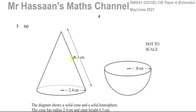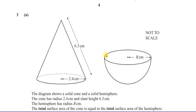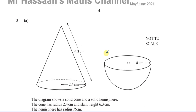Welcome back. This is Mr. Hassan's Math Channel. I'm answering a question from the May-June 2021 IGCSE Cambridge Paper 4058, Paper 4 Variant 1 from May-June 2021. This question is about mensuration — volume, surface areas, and so on. So Part A: